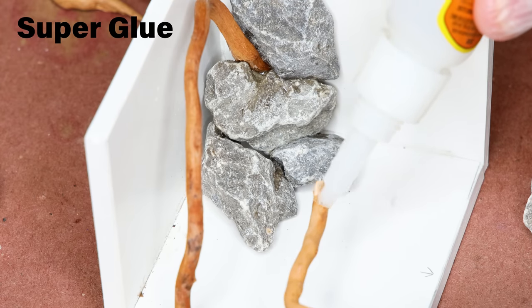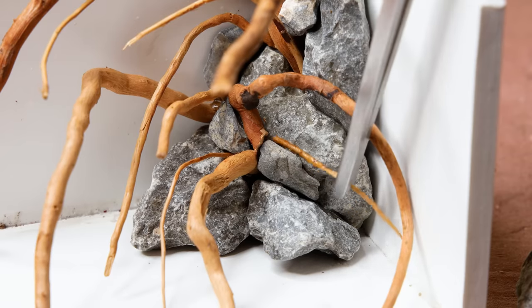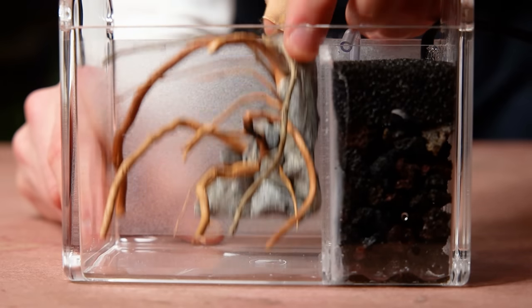As it came together, I used super glue to lock items together. Twigs and smaller stones made for additional texture and variation. The result being a spiraling ready-made scape that I could simply drop into the tank.